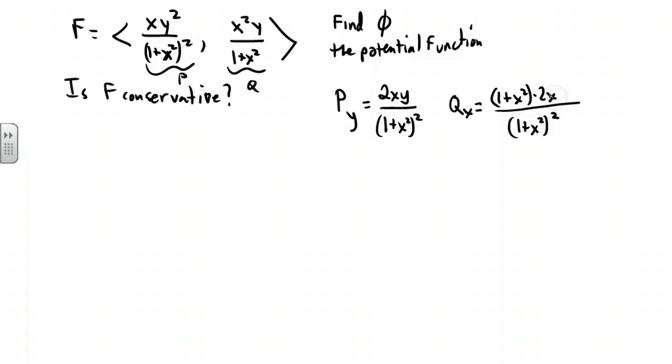We'll bring the denominator up to the numerator, take the derivative of the numerator, 2xy, then we put a subtraction sign and we reverse that, where we leave the numerator alone and multiply it by the derivative of the denominator.